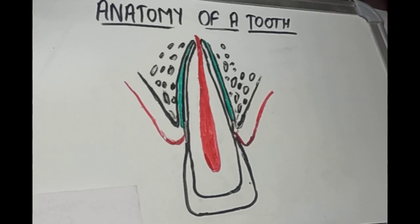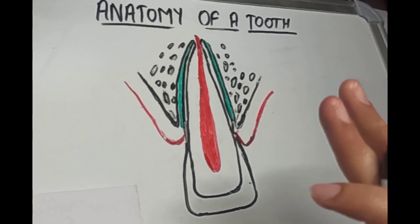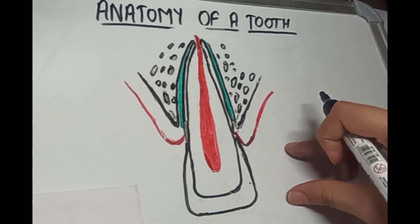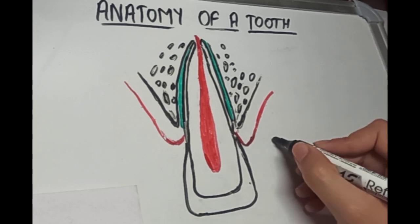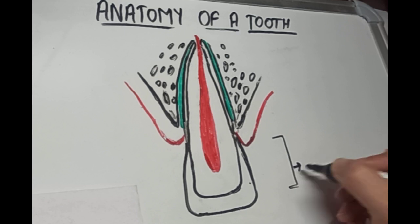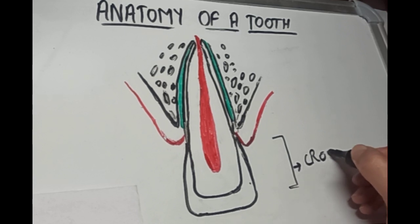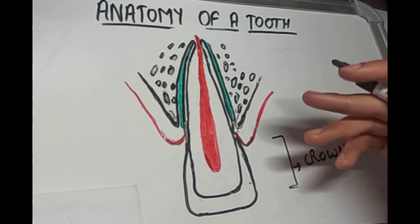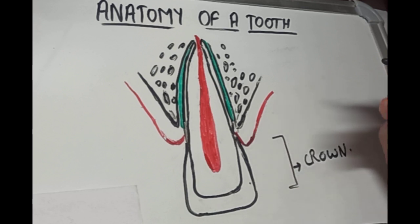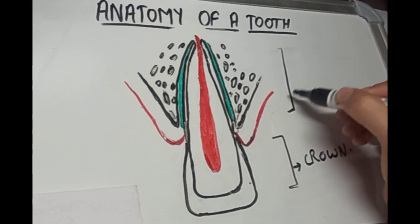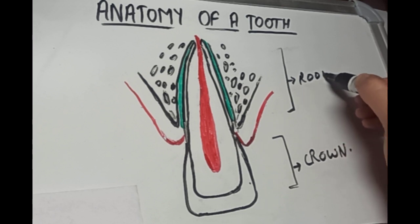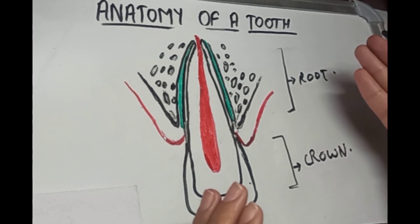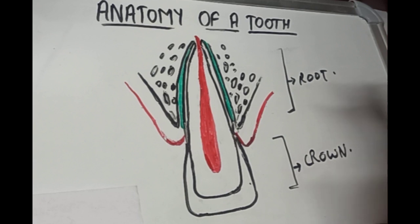So each tooth has a crown and a root portion. The portion of the tooth that you can see inside the oral cavity is the crown portion. And the portion of the tooth that is not visible inside the oral cavity is the root portion — it is embedded in the bone and we cannot see it in the oral cavity.